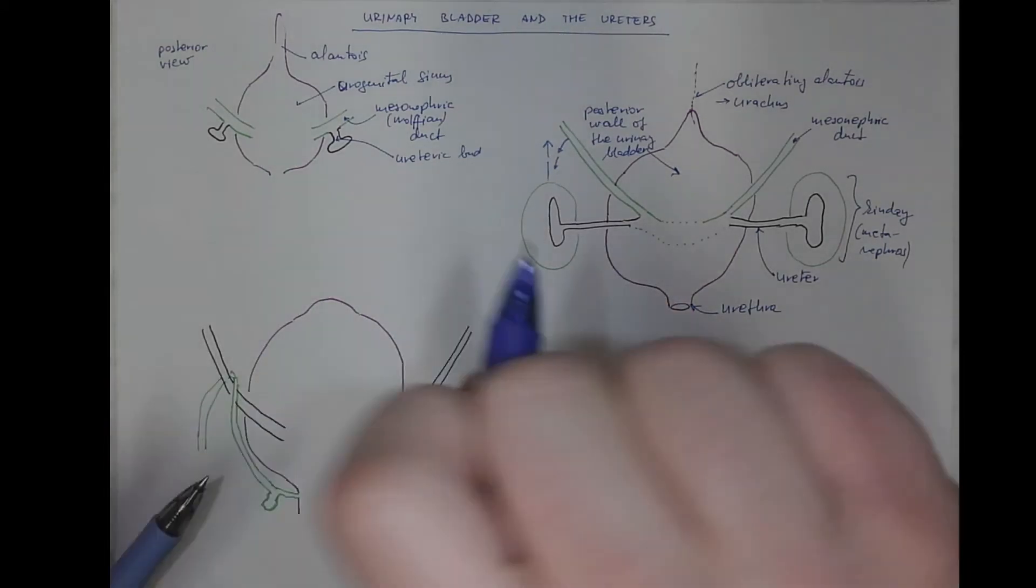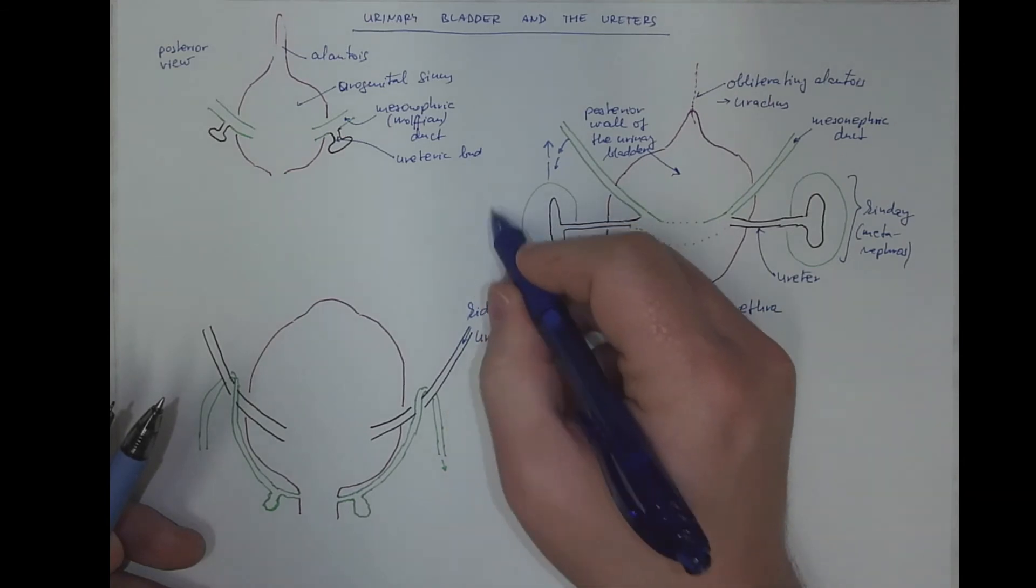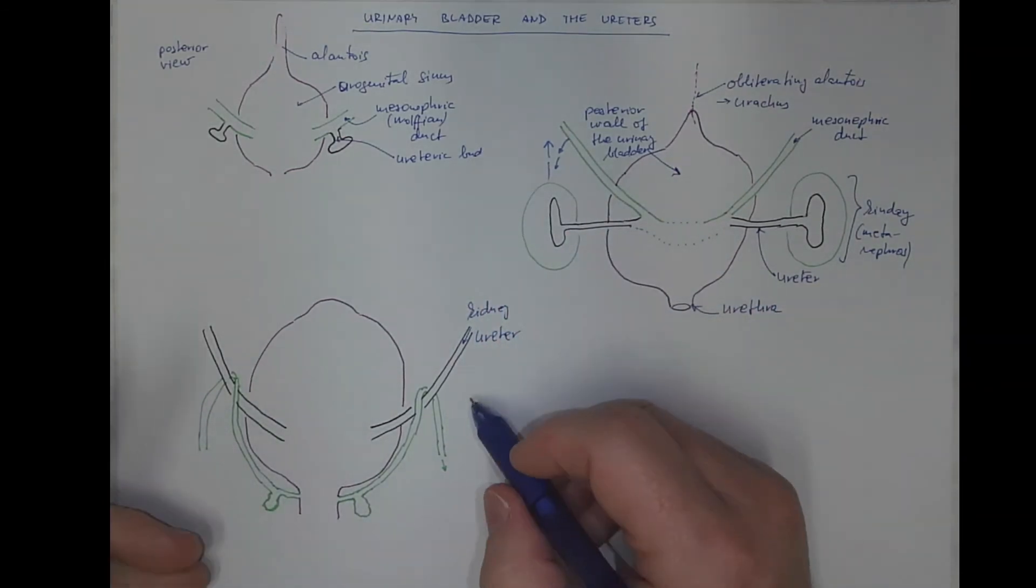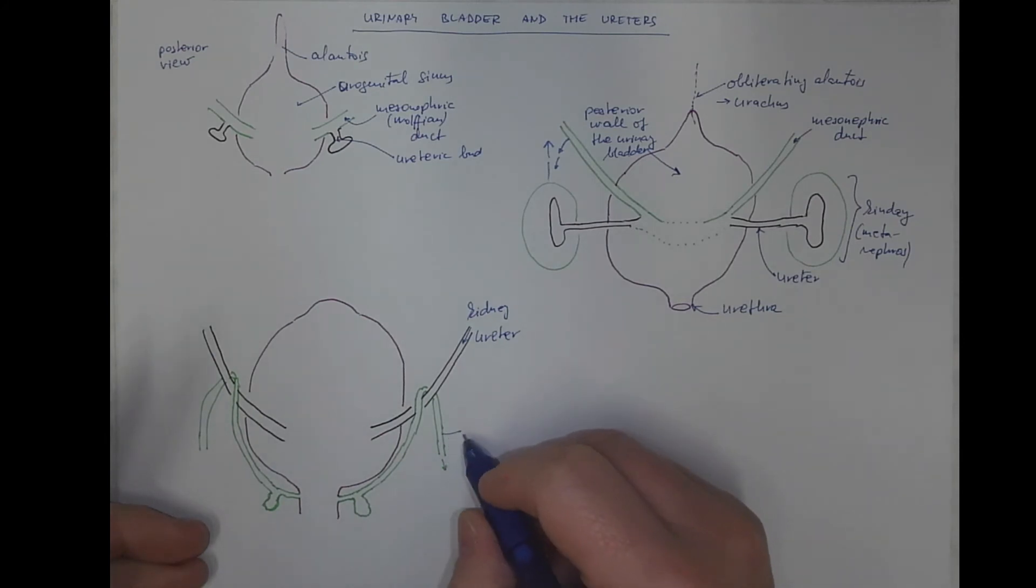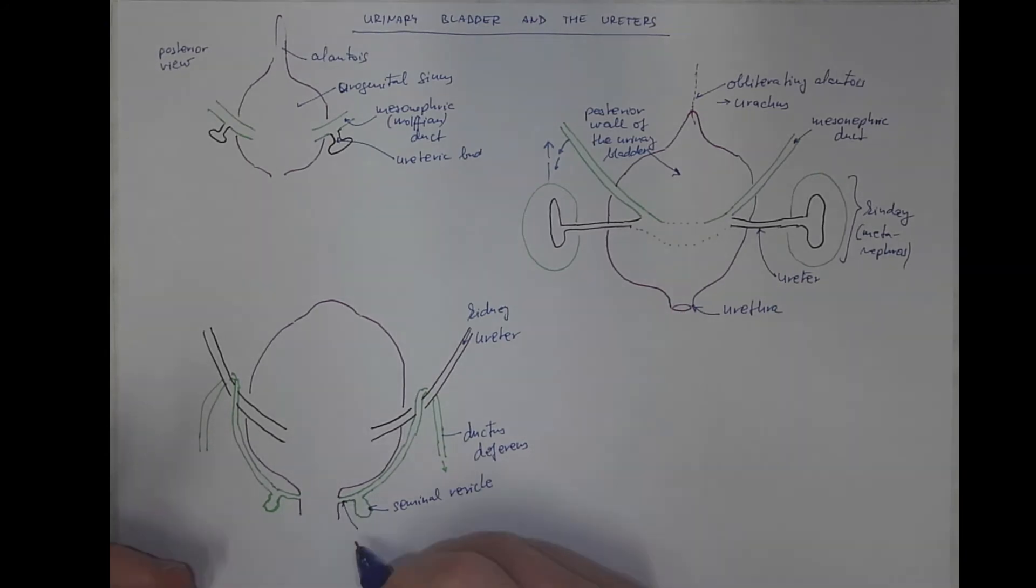So the ureter carries the urine from the kidney which is somewhere up in the lumbar region. This will be the ductus deferens. This is the seminal vesicle, an accessory gland that actually grows from the wall of the ductus deferens and the common part short part is the ejaculatory duct.